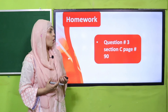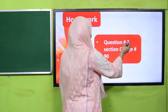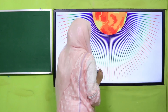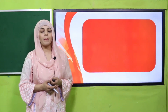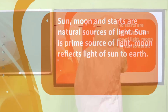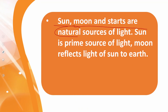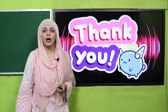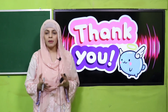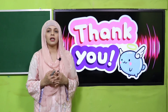Next is homework. For homework, you will do question number 3 from section C on page number 90 in your notebooks. Now is the time for wrap-up. Today we have learnt that sun, moon, and stars are natural sources of light. The sun is the prime source of light. The moon reflects the light of the sun to the Earth. Candle, electric bulbs, neon lights, and sodium lamps are artificial sources of light. I hope you have enjoyed today's lecture. Keep everybody around you safe. Have a good day. Thank you so much and Allah bless.